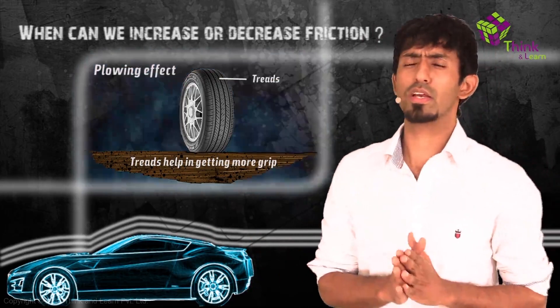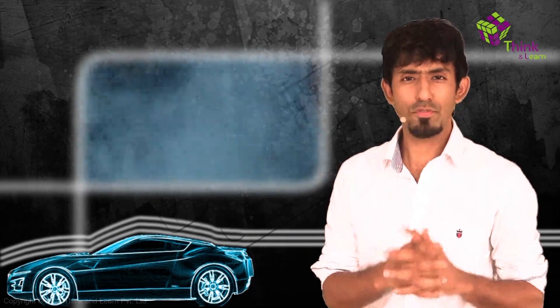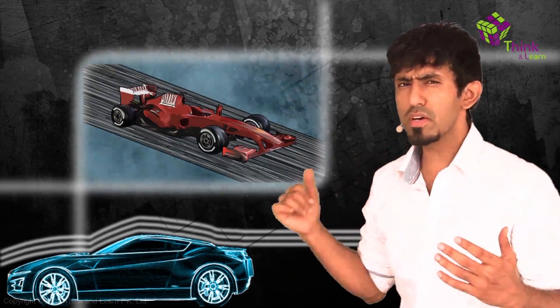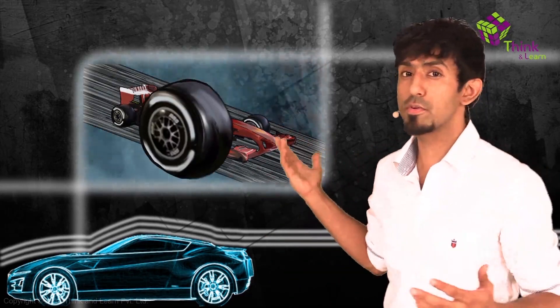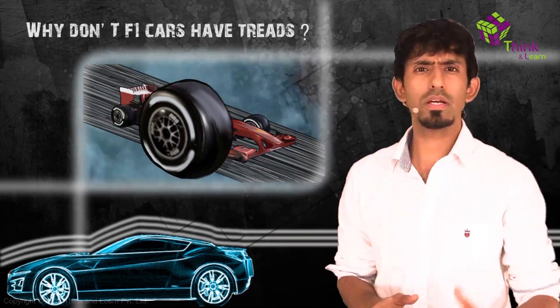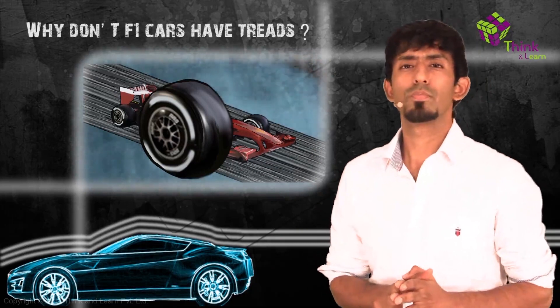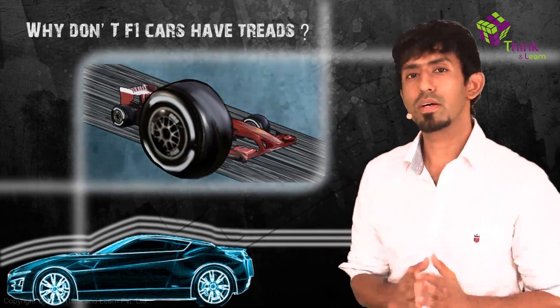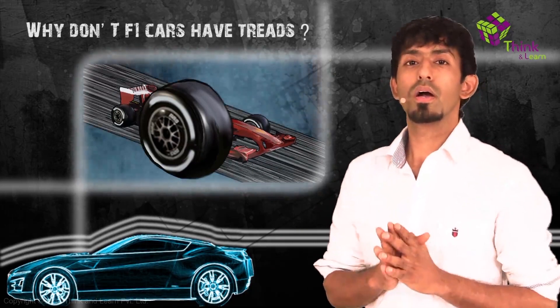If you've watched F1, you'll notice that tires on an F1 race car don't have these treads at all. But they're going so fast they cannot afford to skid. So how can they afford to not have treads, if treads help with friction? That's the question — think about that for a minute, after which we can discuss it together.